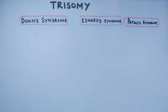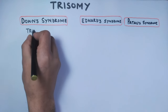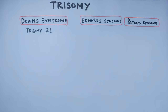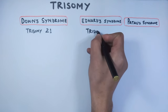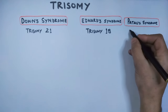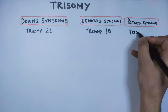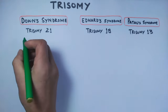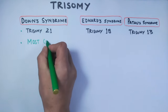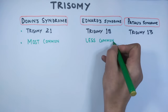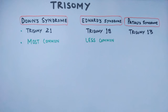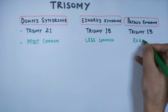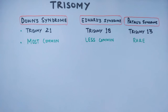First of all, Down syndrome is also called trisomy 21, Edwards syndrome is trisomy 18, and Patau syndrome is trisomy 13. Down syndrome occurs more frequently and is more common than Edwards syndrome, which is less common, and finally Patau syndrome, which is a very rare trisomy that occurs in humans.